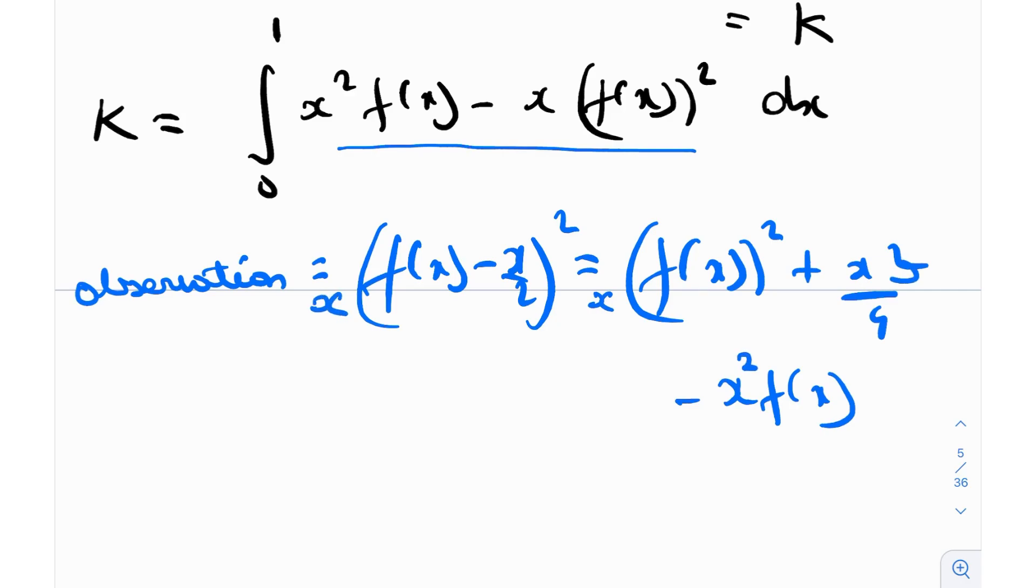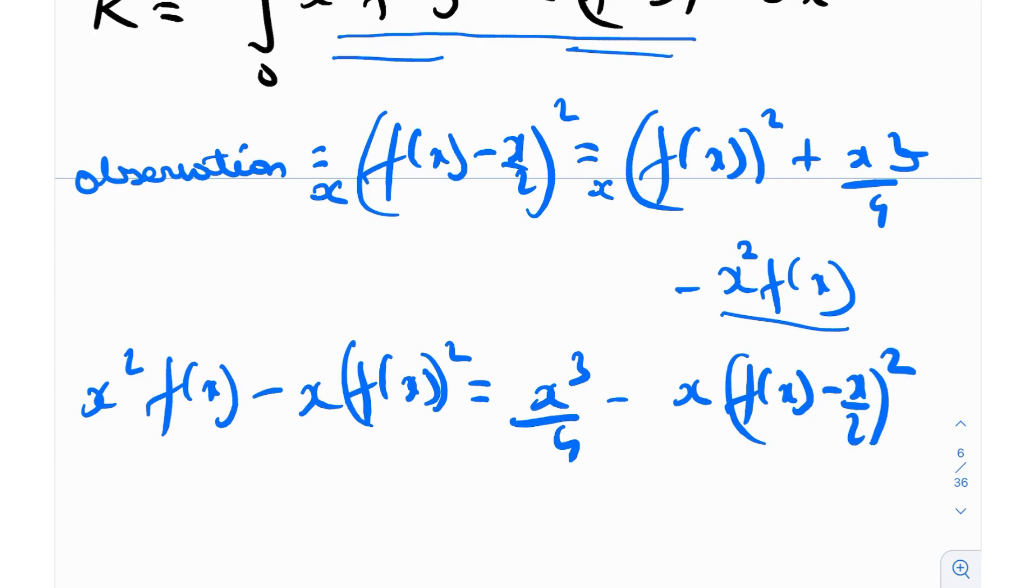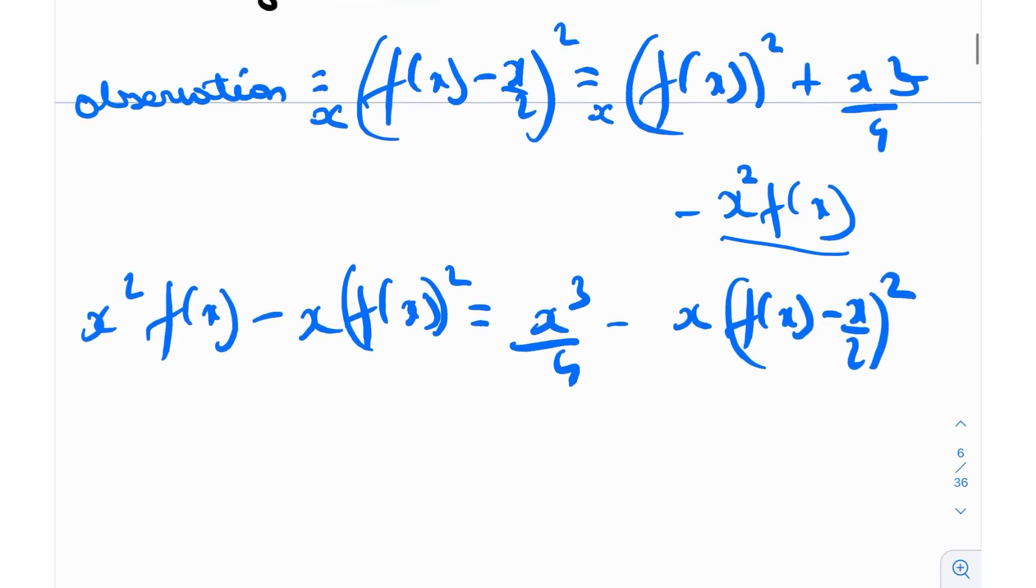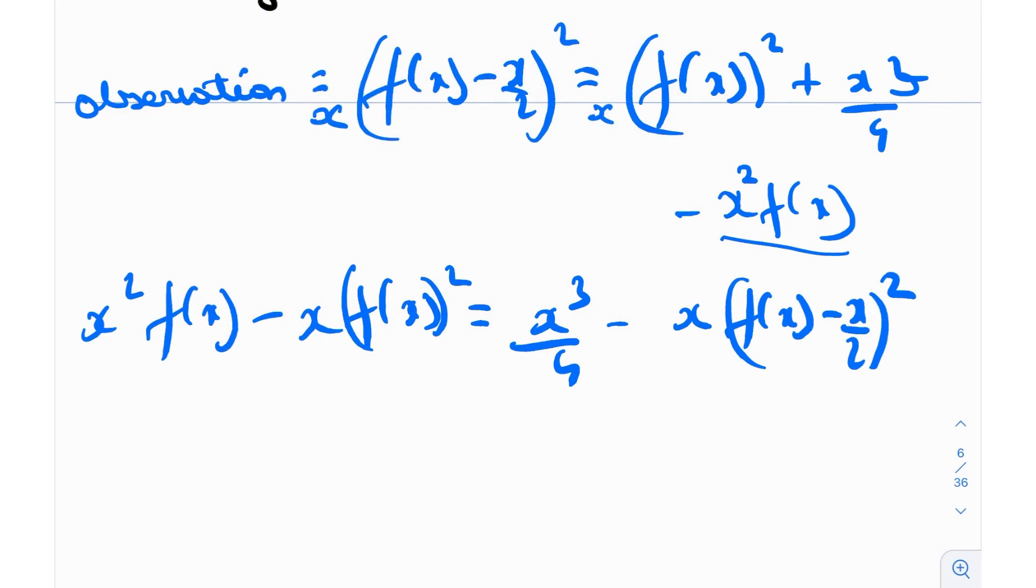So essentially, I'll multiply this entire thing by x. So I'll get something similar x·f(x)², that's over here, x²·f(x), that's over here. So basically, x²f(x) - x·f(x)² will be equal to x³/4 - x[f(x) - x/2]².